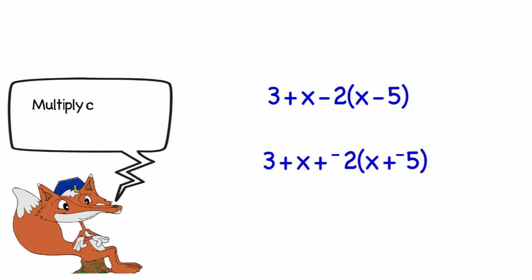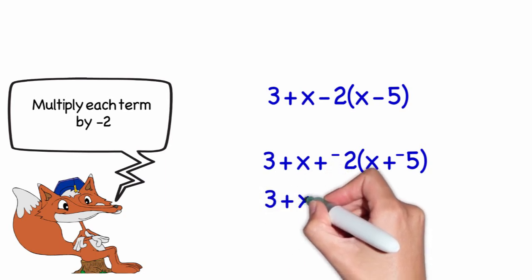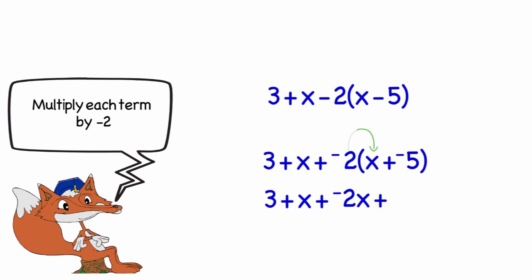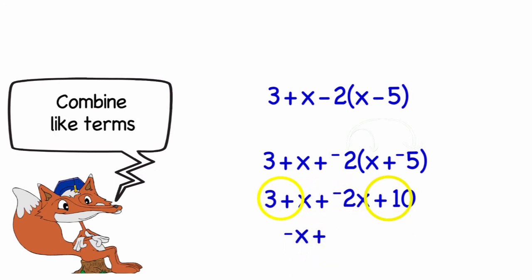To remove the parentheses, I'm going to be using my distributive property. So it's 3 plus x plus negative 2 times x, which is negative 2x, and negative 2 times negative 5, which is positive 10. When I combine my like terms, I get negative x plus 13.